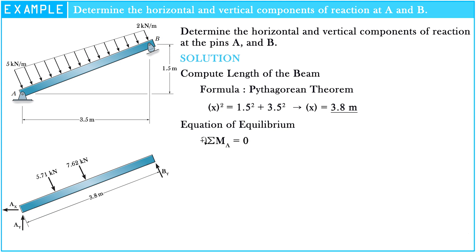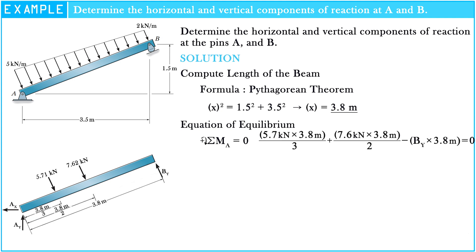The sum of moments at point A equals zero. So: 5.7 kN multiplied by 3.8 meters divided by 3, plus 7.6 kN multiplied by 3.8 meters divided by 2, minus B_y multiplied by 3.8, equals zero. Hence, B_y equals 5.7 kN.